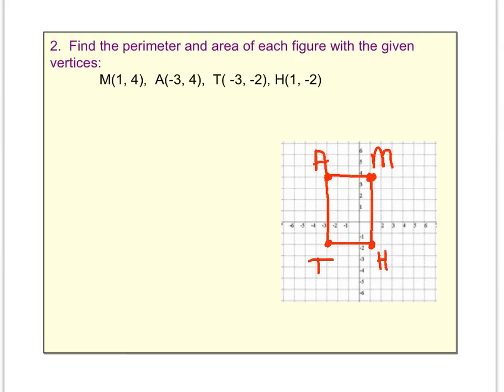This is another example of finding perimeter and area based on a coordinate plane. So what you see here is you have four points: M, A, T, and H.